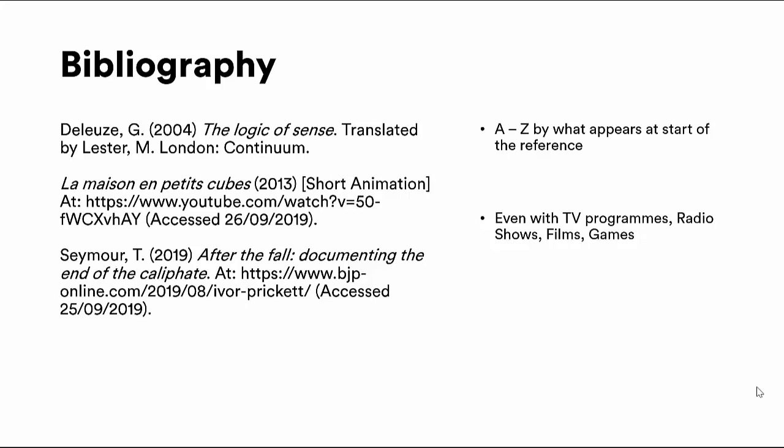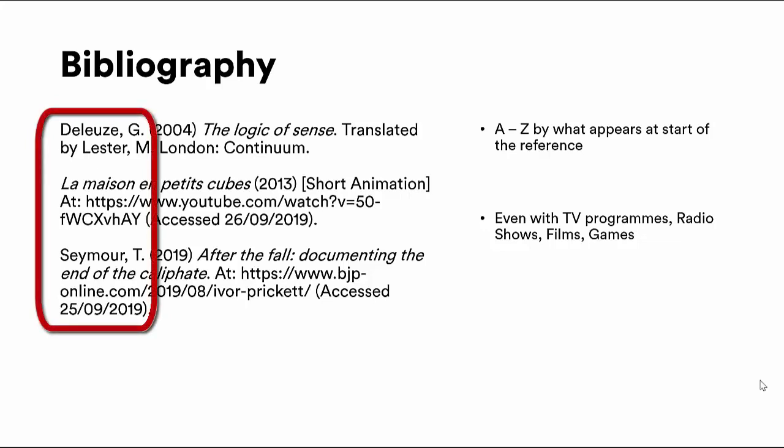The second important point is about order. A bibliography is arranged A to Z, and that arrangement starts with what appears at the very start of the reference. We start with the surname of authors, then the initial. If we had two things by the same author with the same initial, we would go to the title and go from there.